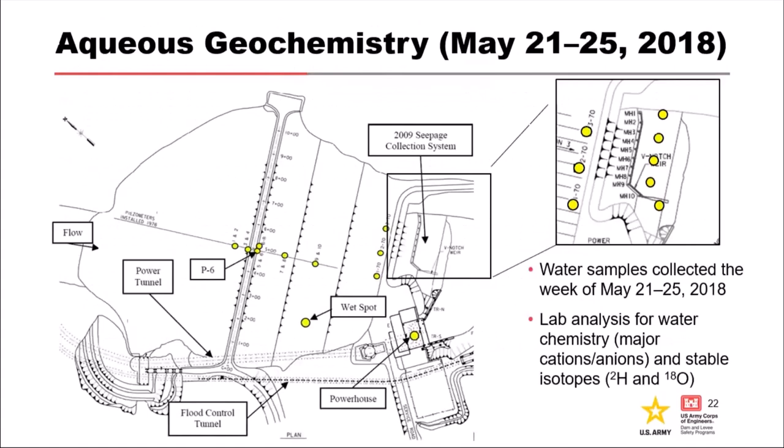In May 2018 we performed our first round of aqueous geochemistry sampling. This is a plan map of the dam showing locations of piezometers and manholes highlighted in yellow, and manholes in the seepage collection system. I worked with a chemist in Albuquerque District and an environmental engineer in Fort Worth District to scope and execute the sampling. By sampling and analyzing the water chemistry, the team was trying to answer: is the water in the piezometer directly influenced by the reservoir, or coming from the foundation, or influenced by regional groundwater?